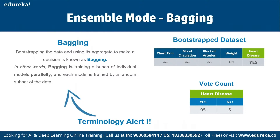Bootstrapping — also referred to as bagging — is an estimation method used to make predictions on a dataset by resampling it. To create a bootstrap dataset, we randomly select samples from the original dataset, and a key point is that we can select the same samples more than once. For example, using features like chest pain, blood circulation, and blocked arteries, the vote count might result in 95% yes and 5% no.